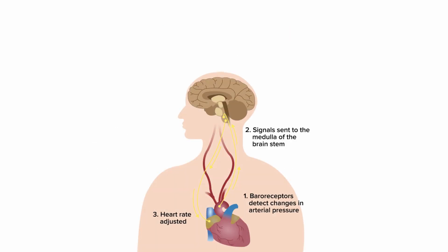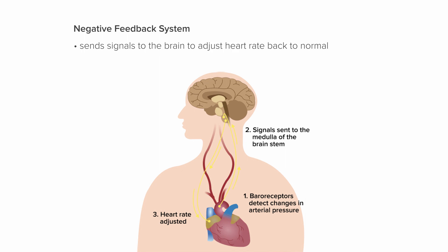On the other end, we also have mechanoreceptors that detect changes in blood through pressure-sensitive baroreceptors. Through a negative feedback system — rather than a feed-forward system — signals are sent to the brain to adjust heart rate back to normal. This happens in situations where blood pressure is getting too high.